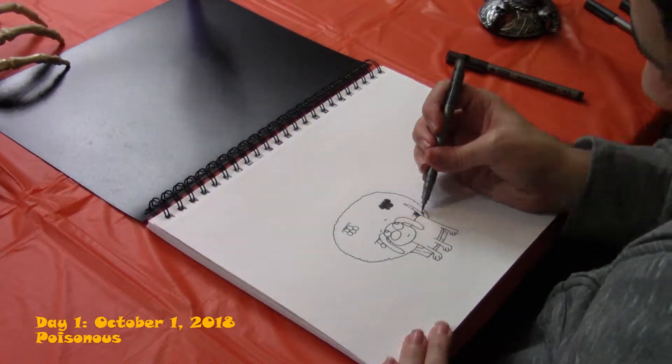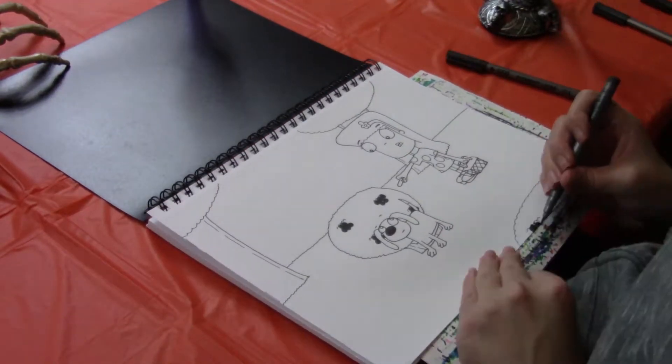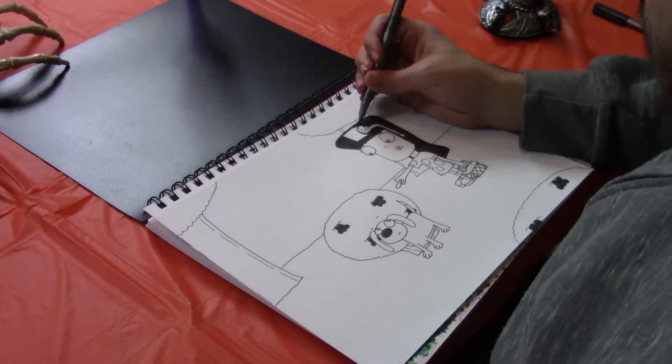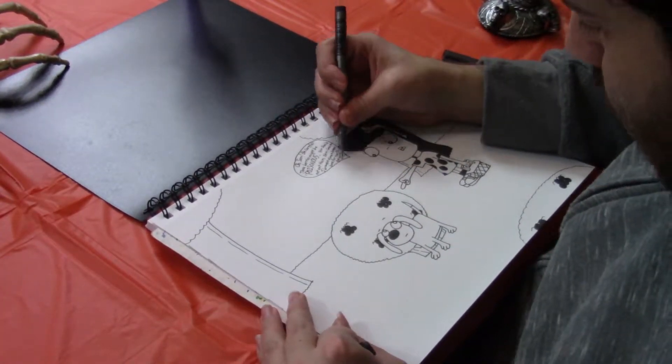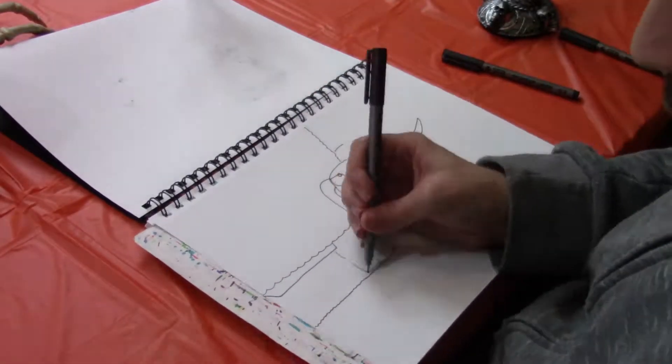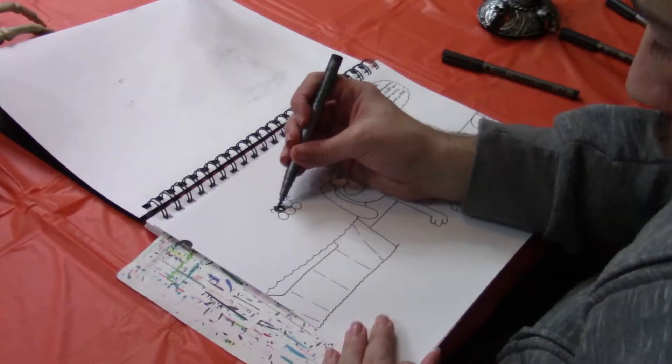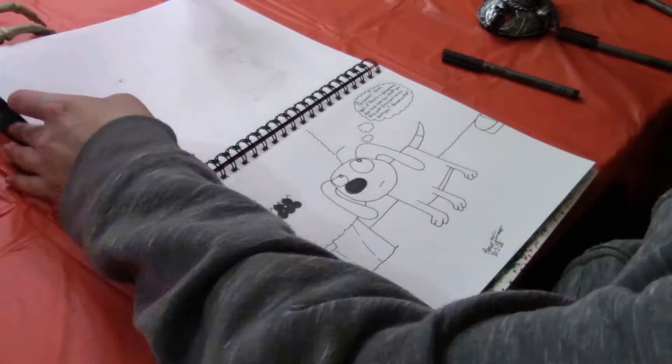Okay, so for the first comic, using the prompt word Poisonous, I decided to create a little story of Sam and River on their way to a picnic. Sam stops by a bush to eat some potentially poisonous berries, and River tries to stop him. Now, this first comic has only two panels.